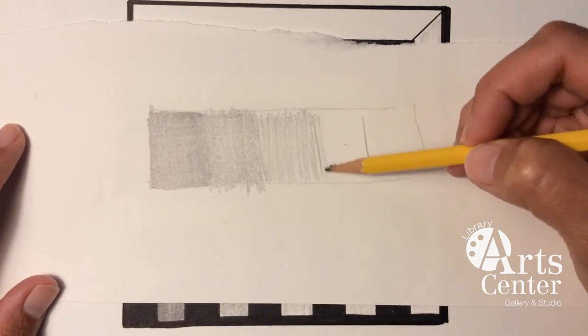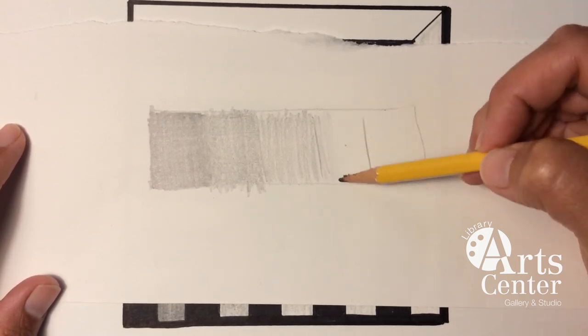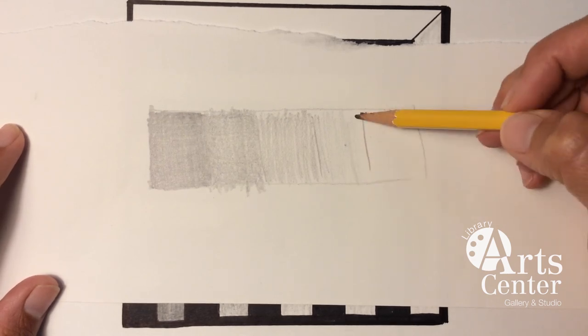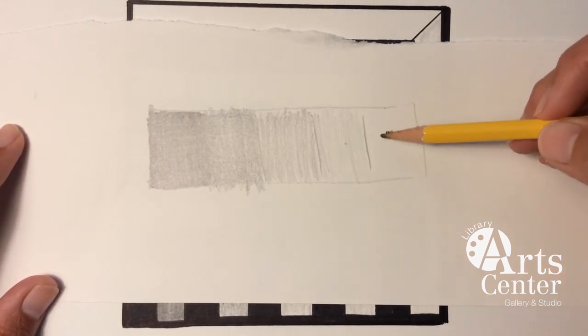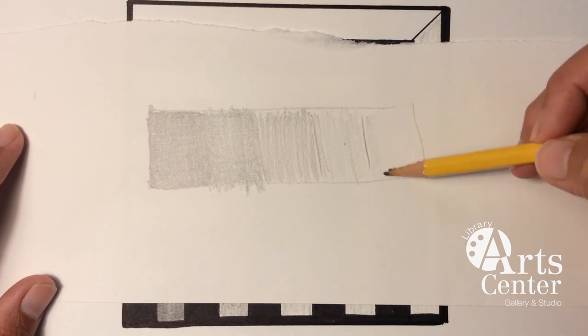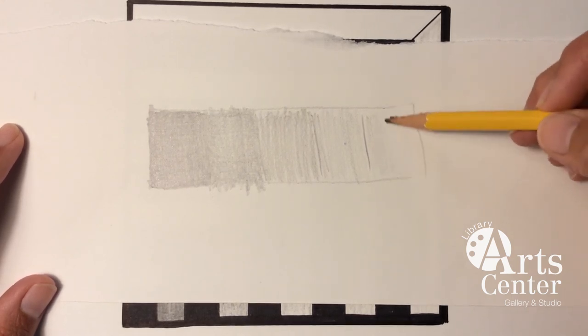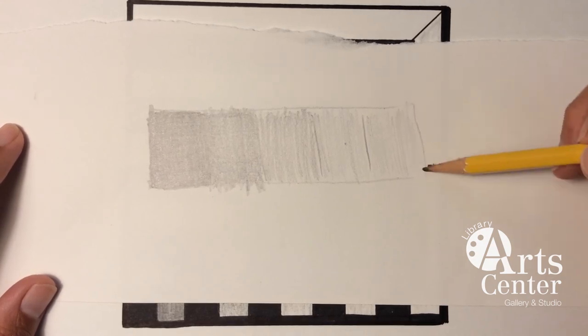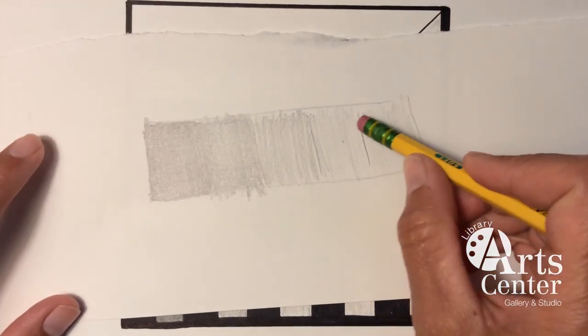And the next one, I want to get even lighter. So I'm just barely putting pressure on my pencil. And same thing here, even lighter, just barely touching the surface. You can also use your eraser to lighten up.